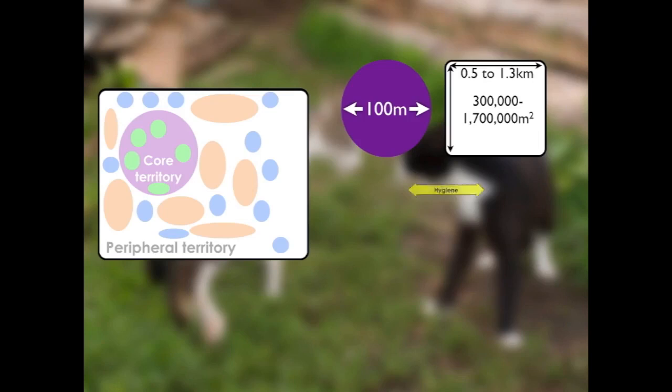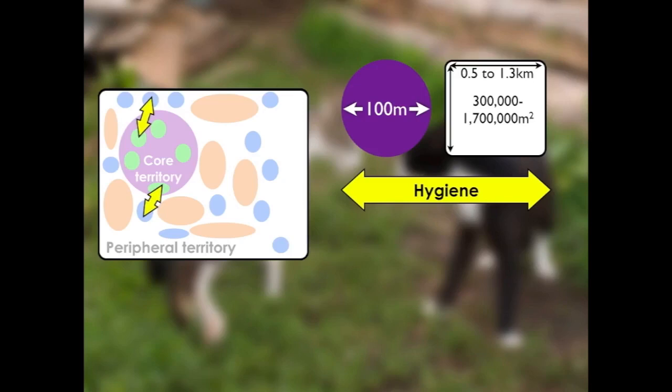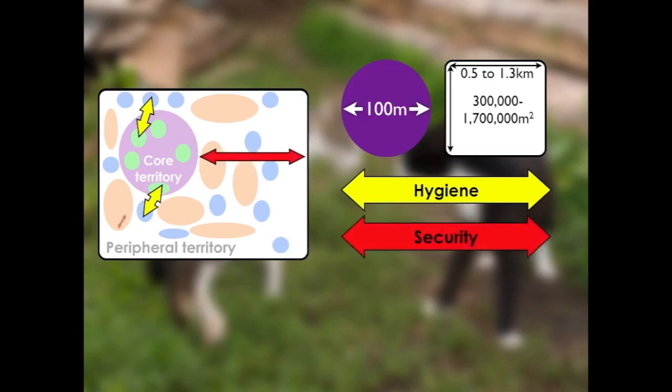The first of those optimised characteristics is hygiene. Cats will locate their latrine sites within a convenient distance of a resting and hunting area, but not close enough to increase the risk of contamination or disease spread. They also try to optimise security. Although on the diagram the core territory looks close to the boundary of the peripheral territory, it might be more than 100 metres distance.